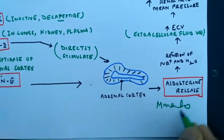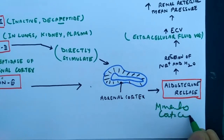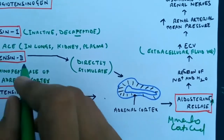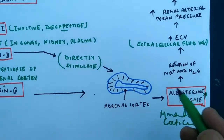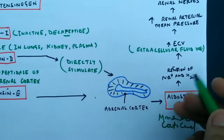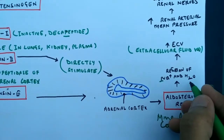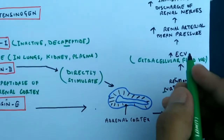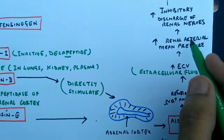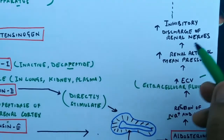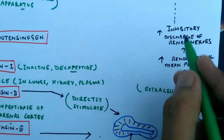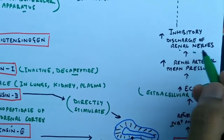The release of aldosterone is stimulated by angiotensin 2 and 3. The level of sodium is enhanced in the blood and plasma, and retention of sodium and water in the blood is increased. Extracellular volume is also increased, and renal arterial mean pressure is also increased.